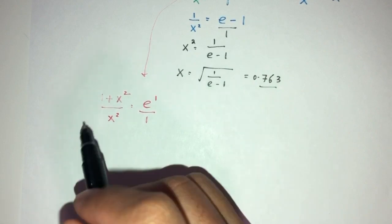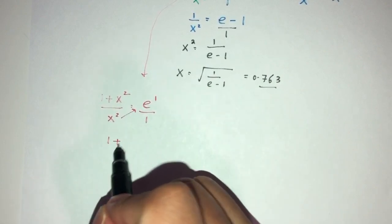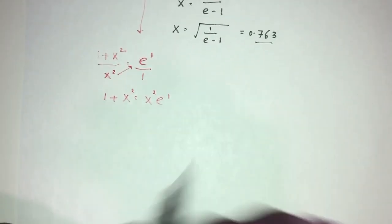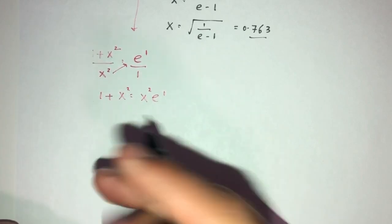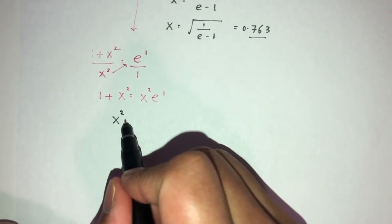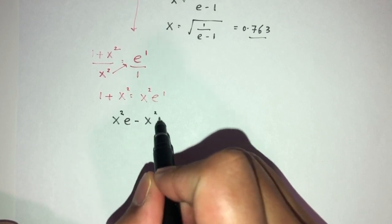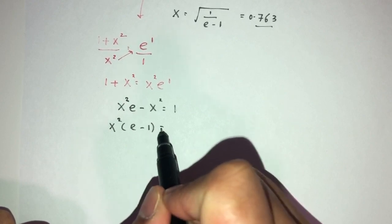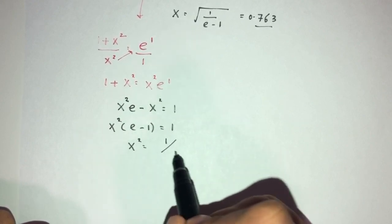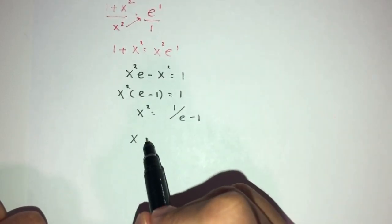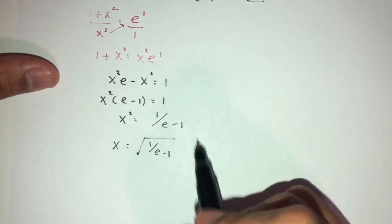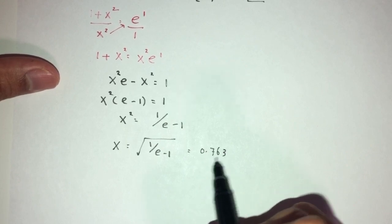Alternatively, by cross-multiplying directly: 1 plus x squared equals x squared times e, so x squared times e minus x squared equals 1, giving x squared(e minus 1) equals 1. Either way, x squared equals 1 over (e minus 1), so x equals the square root of that, which is 0.763 to 3 significant figures. We take the positive root since ln cannot take negative values.